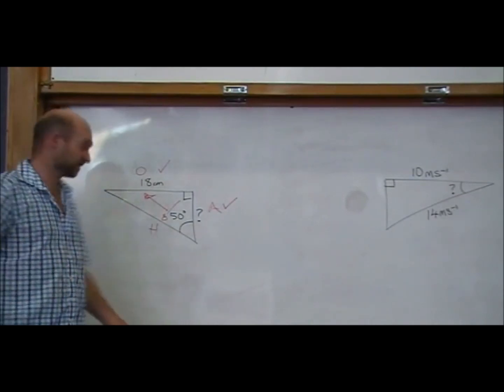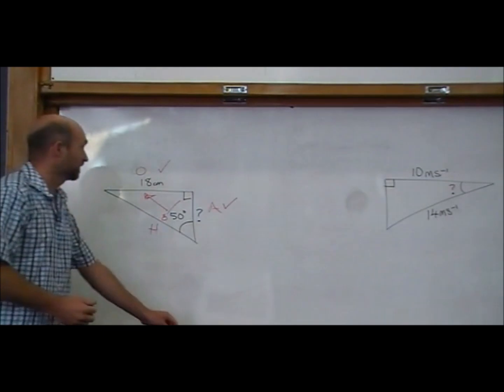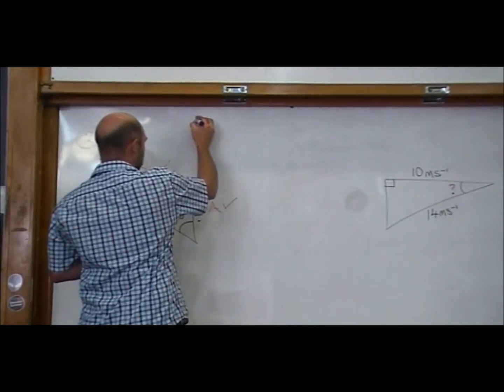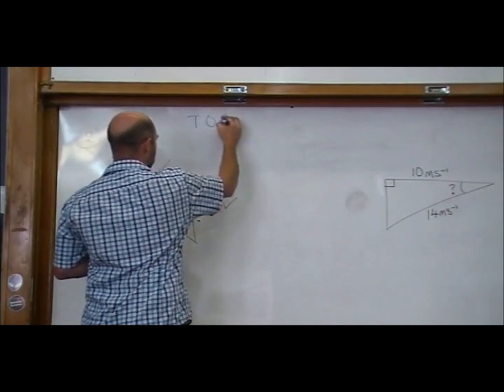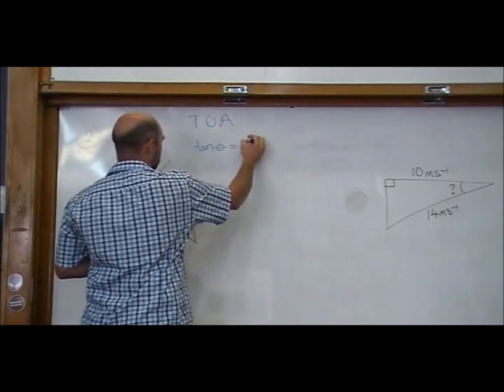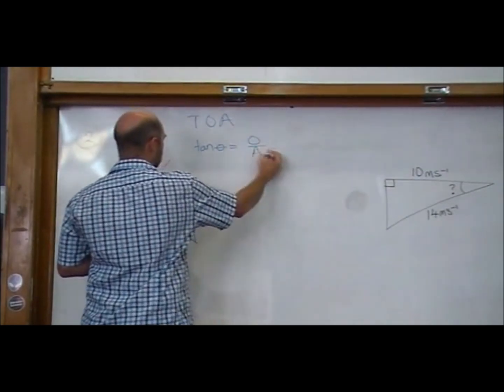Tan. Tan, yeah. Tan because it's the toa one. And so we're going to write out the same thing that that toa makes us think: tan angle equals opposite over adjacent.